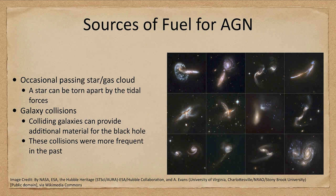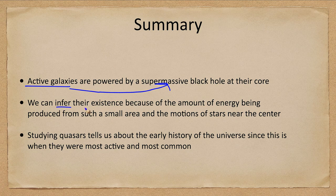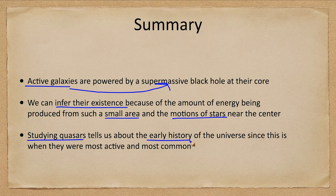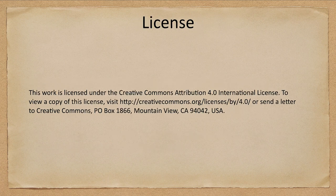In summary, active galaxies are powered by a supermassive black hole at their core. We infer their existence from the amount of energy produced from a small area and the motion of stars at the center. Studying quasars tells us about the early history of the universe, when they were most active and most common. Today the black holes are simply dormant. That concludes this lecture on supermassive black holes — we'll be back for another topic in astronomy. Have a great day everyone, and I will see you in class.